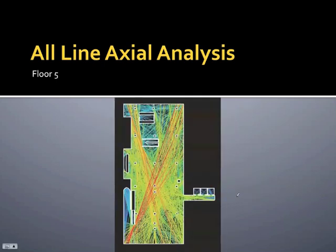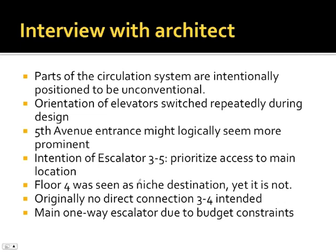Finally, floor 5 is where all routes converge. This is where everyone is intended to arrive as their first point of destination, with the escalators coming from level 3 below, the bank of elevators, and the stair coming up from level 4.